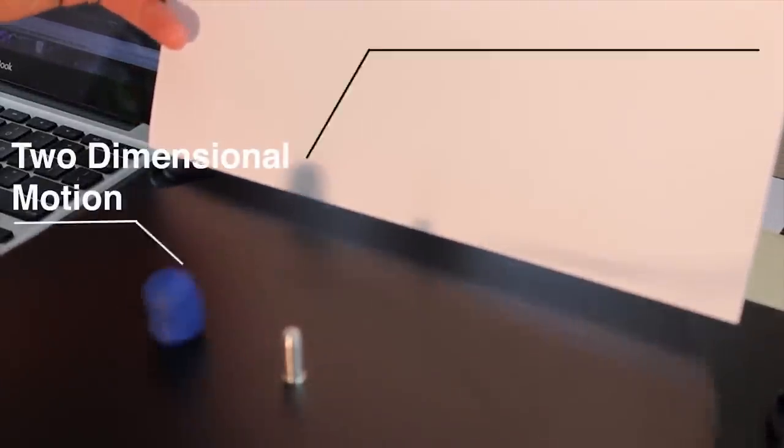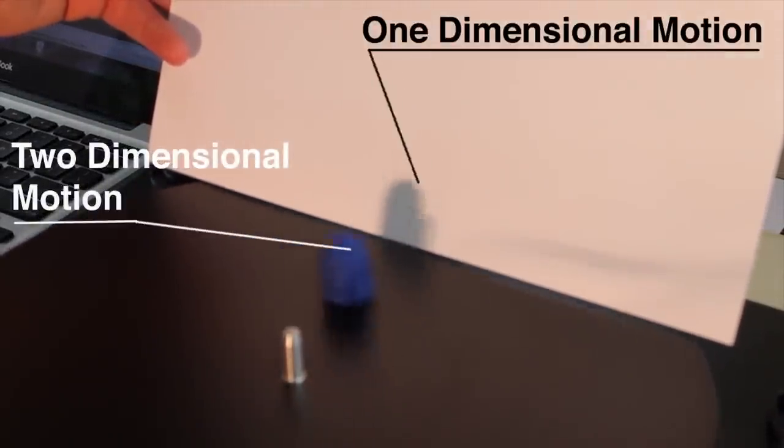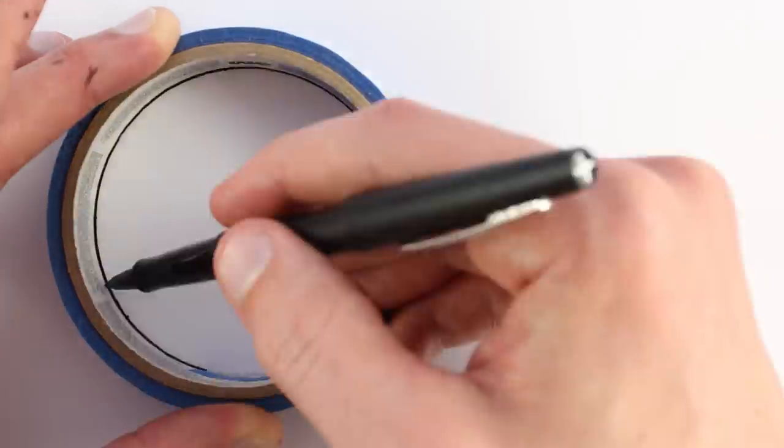One way to do this physically is to cast a shadow of the object in motion. The shadow moves in one less dimension than the object does. Mathematically, we can compute projected motions using right triangles.